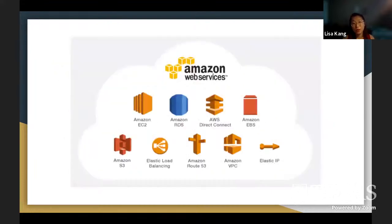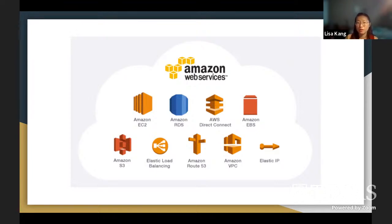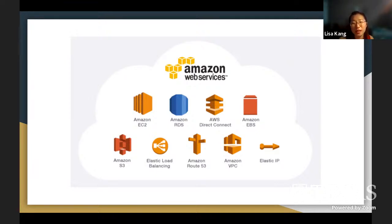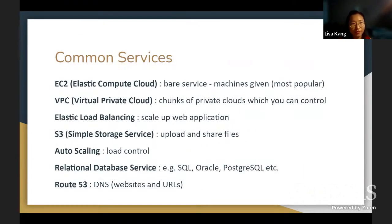These are some of the most popular web services within AWS: AWS EC2 is the most used service, followed by Amazon RDS, AWS Direct Connect, Amazon EBS, Amazon S3, Elastic Load Balancing, Route 53, VPC, and Elastic IP. We'll be covering some of these right here.